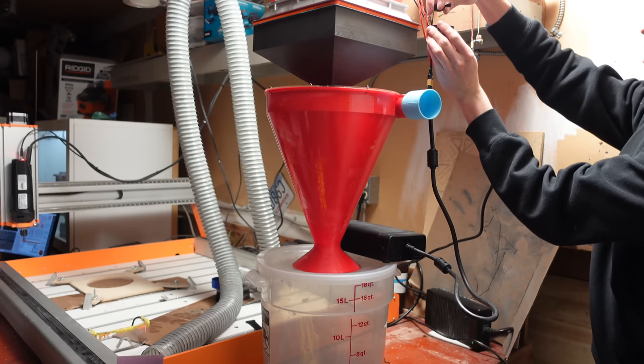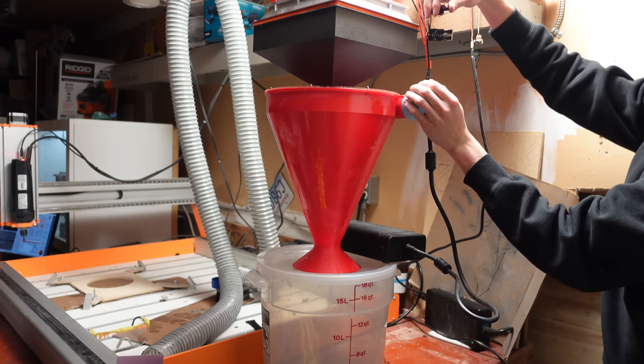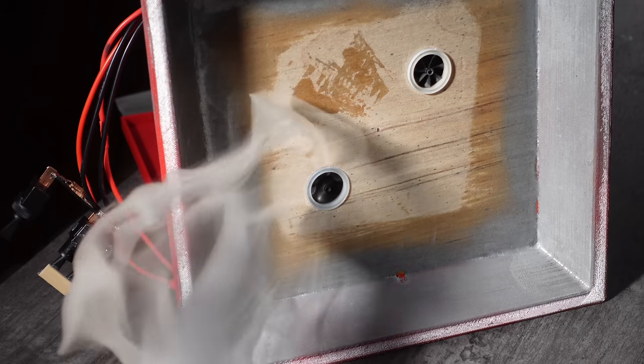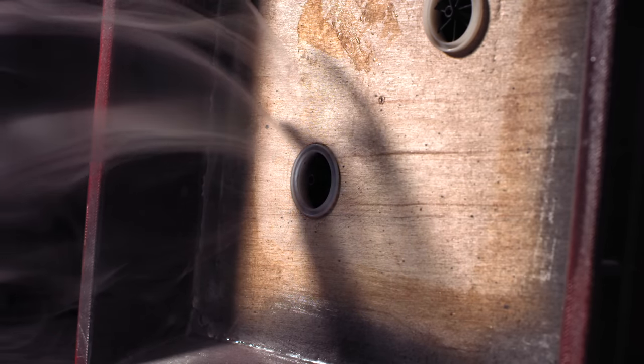Upon powering it up for the first time, the Dyson motors were doing that over-RPM protection thing they do when the airflow is restricted too much. I wasn't exactly sure why, but one suspicion I had was that the abrupt edge of the intake was causing some turbulence and blocking airflow.